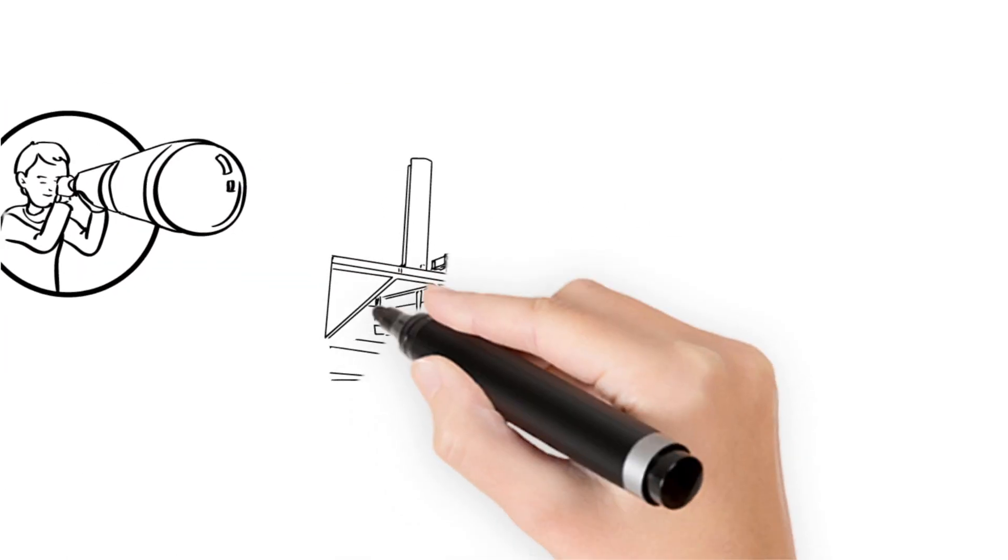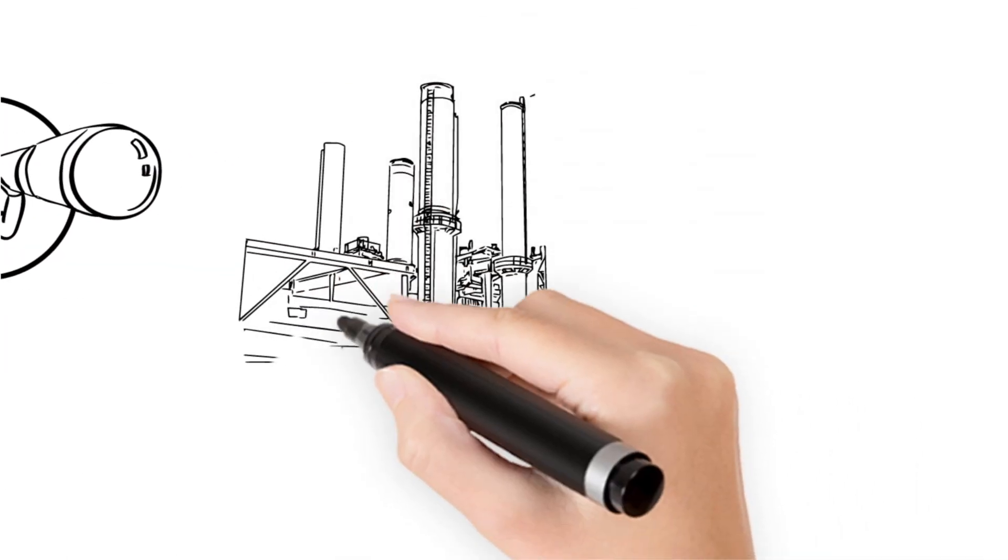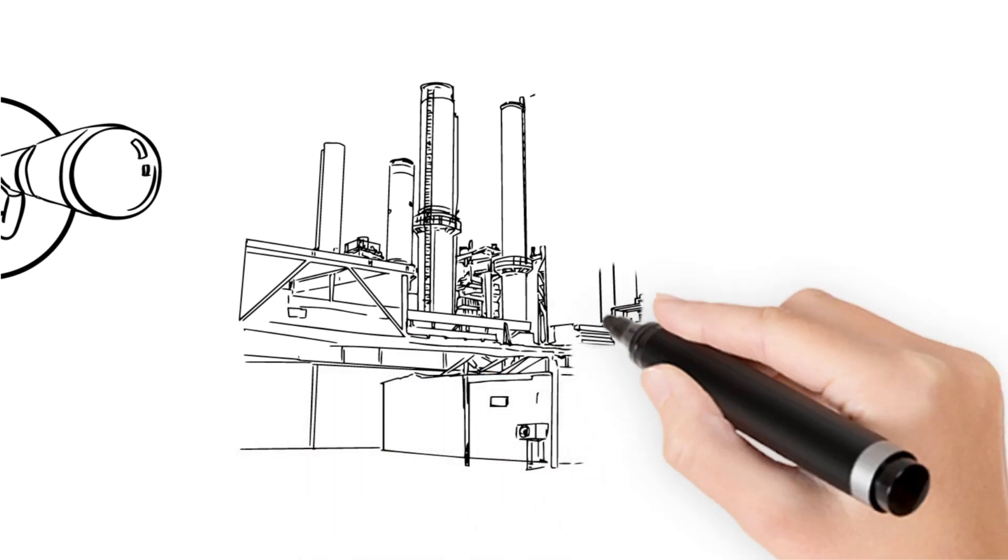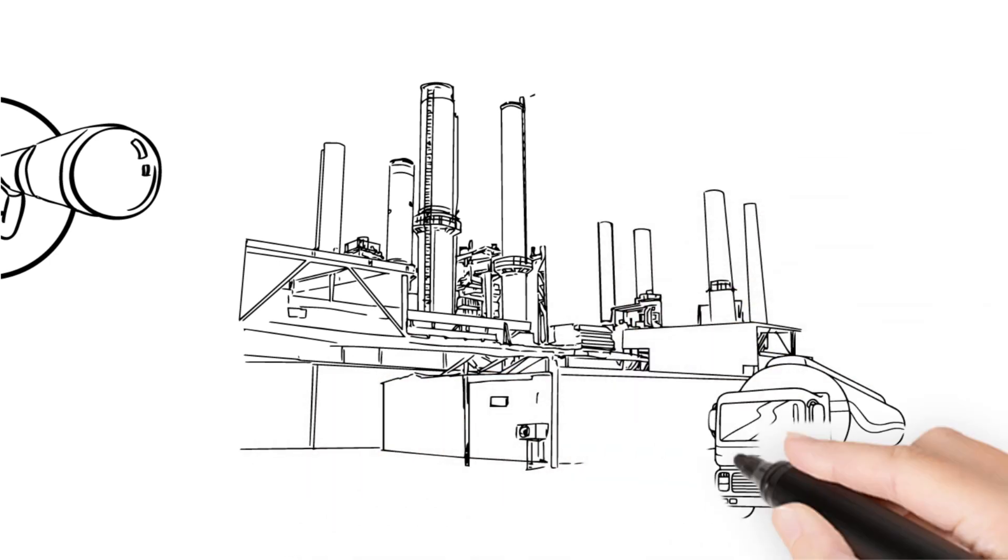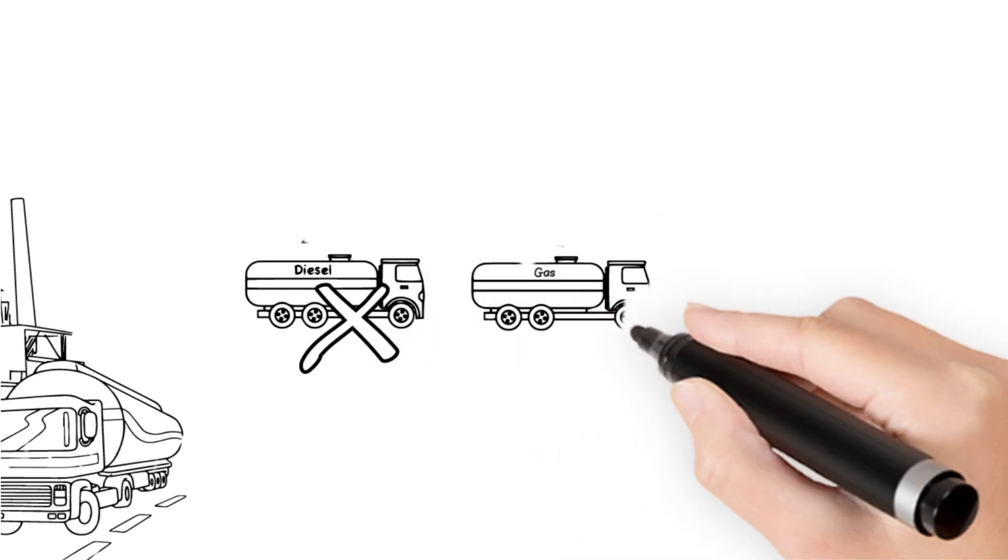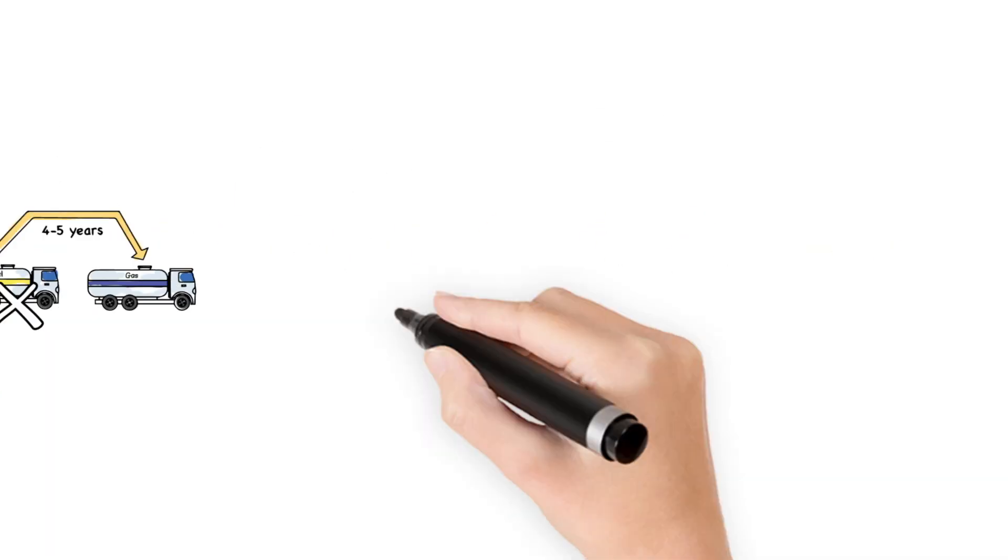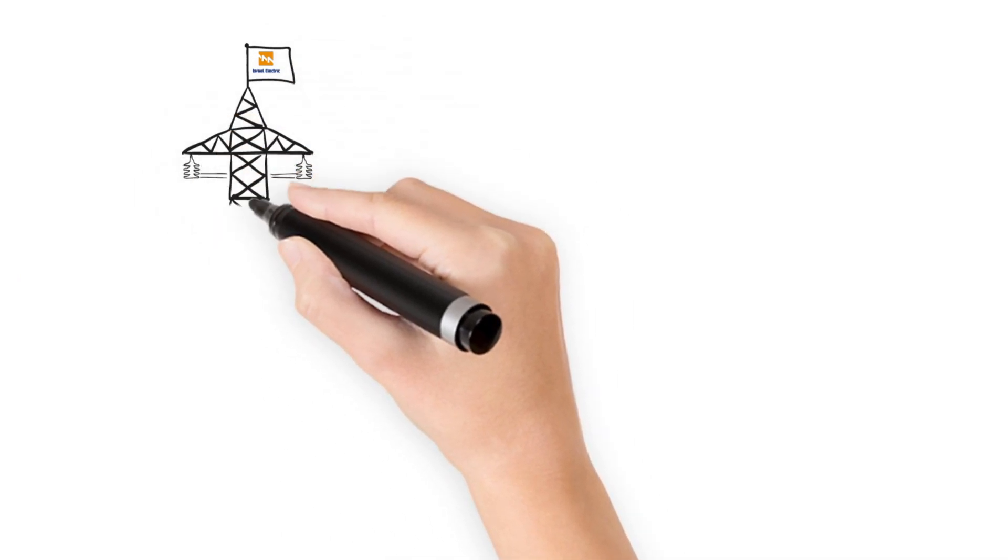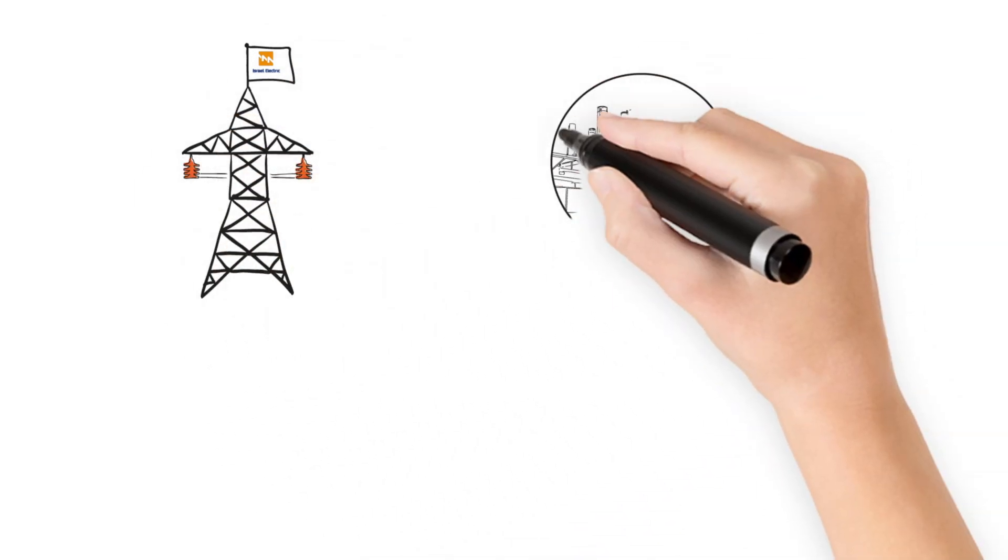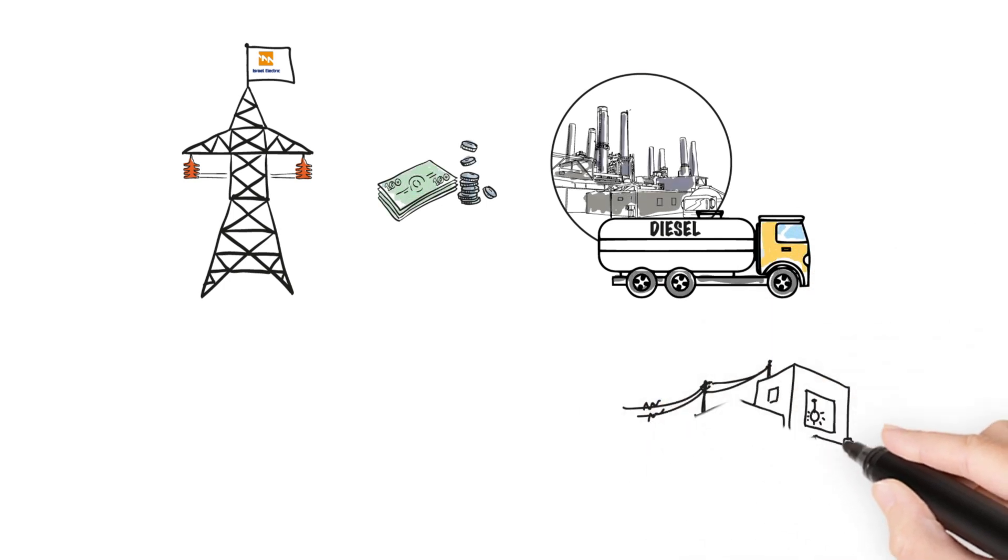One solution is to convert the Gaza power plant to run on natural gas, which is cheaper and cleaner than the expensive diesel fuel currently used. That would take a minimum of 4 to 5 years to implement. Until then, importing power from Israel would be cheaper than continuing to run the Gaza power plant on diesel fuel. This means more electricity for Gazans at a cheaper price.